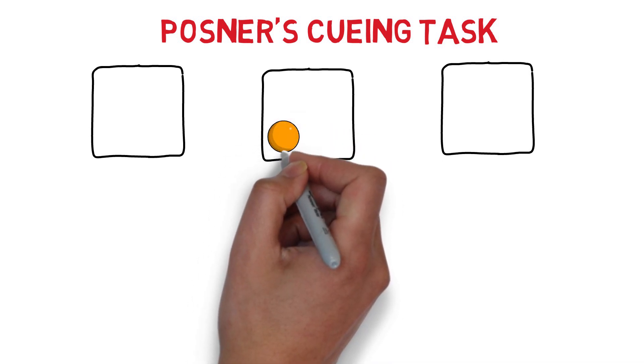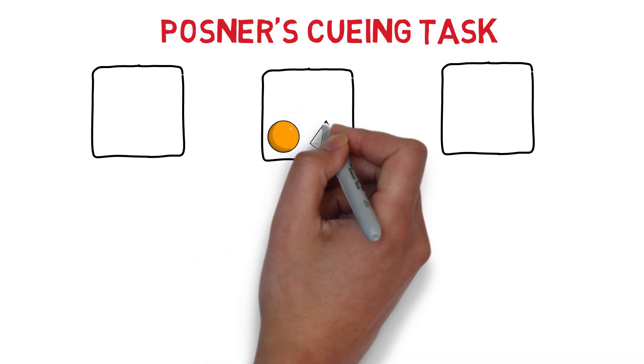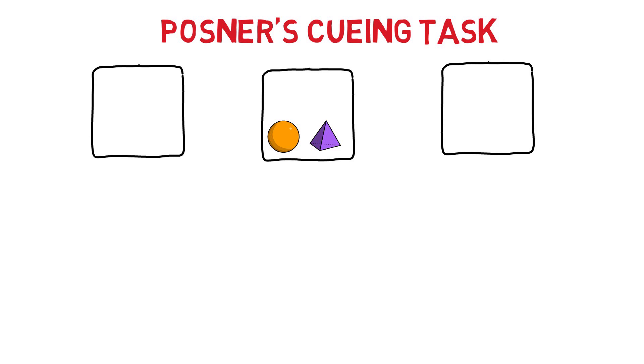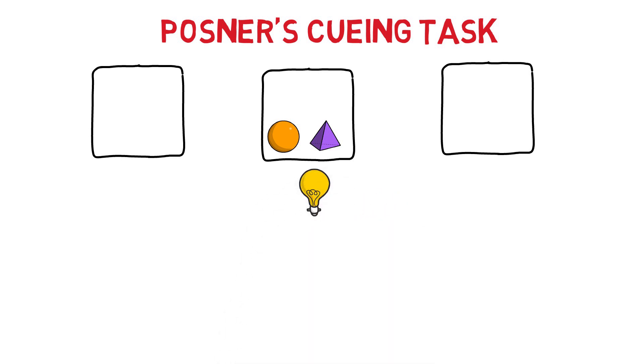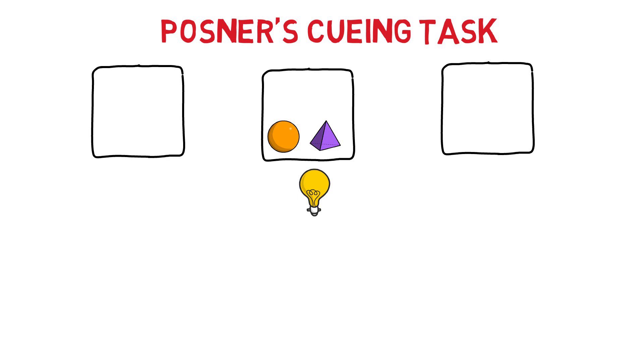The target could be a small square, circle, triangle, etc. But at a brief interval before the onset of the target, a cue would appear, such as a flash. On some trials, the cues would be in the same box as the target, and on others it would not be. So the cue, aka the flash, gives you no information about where the target is going to be.